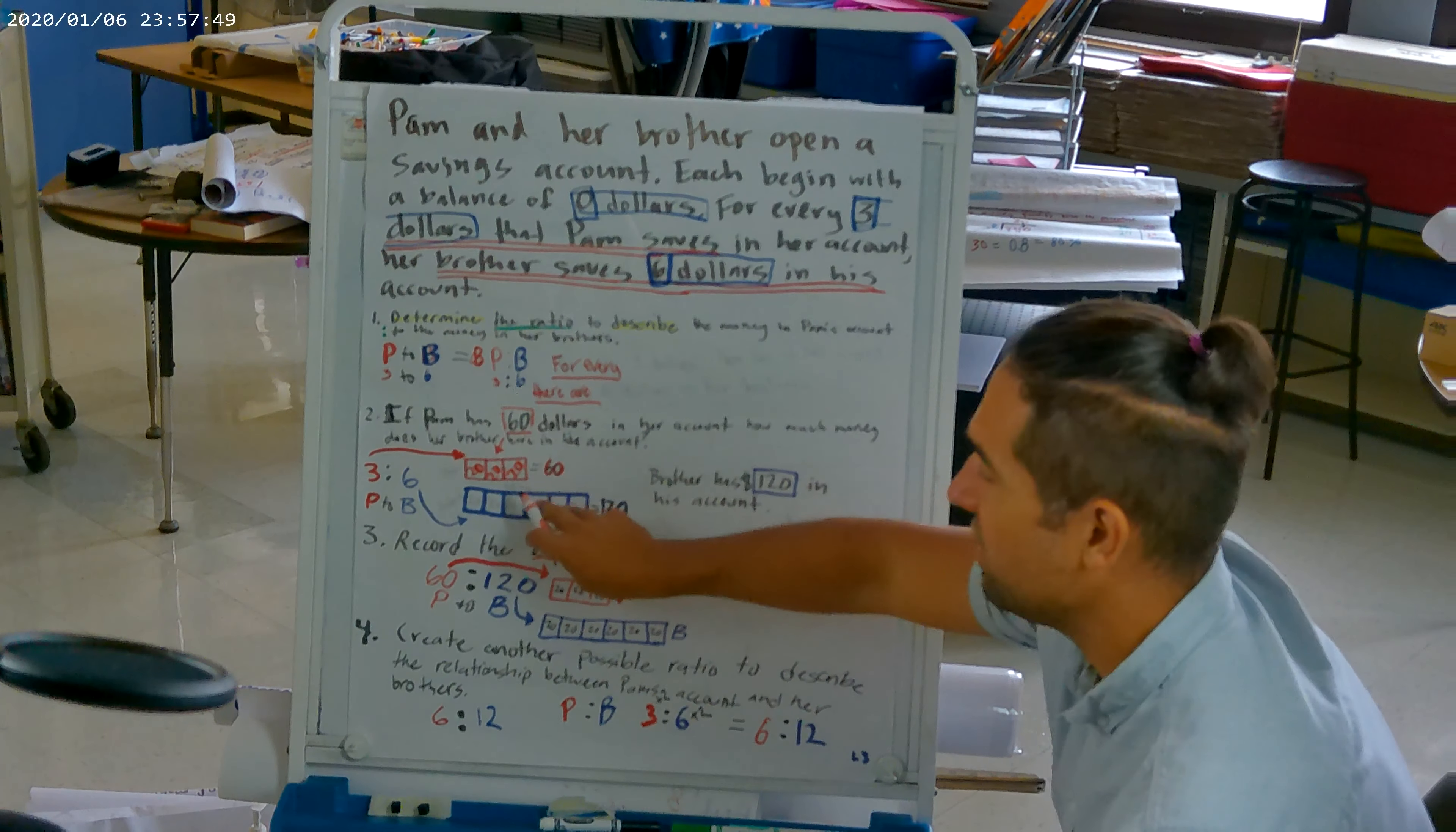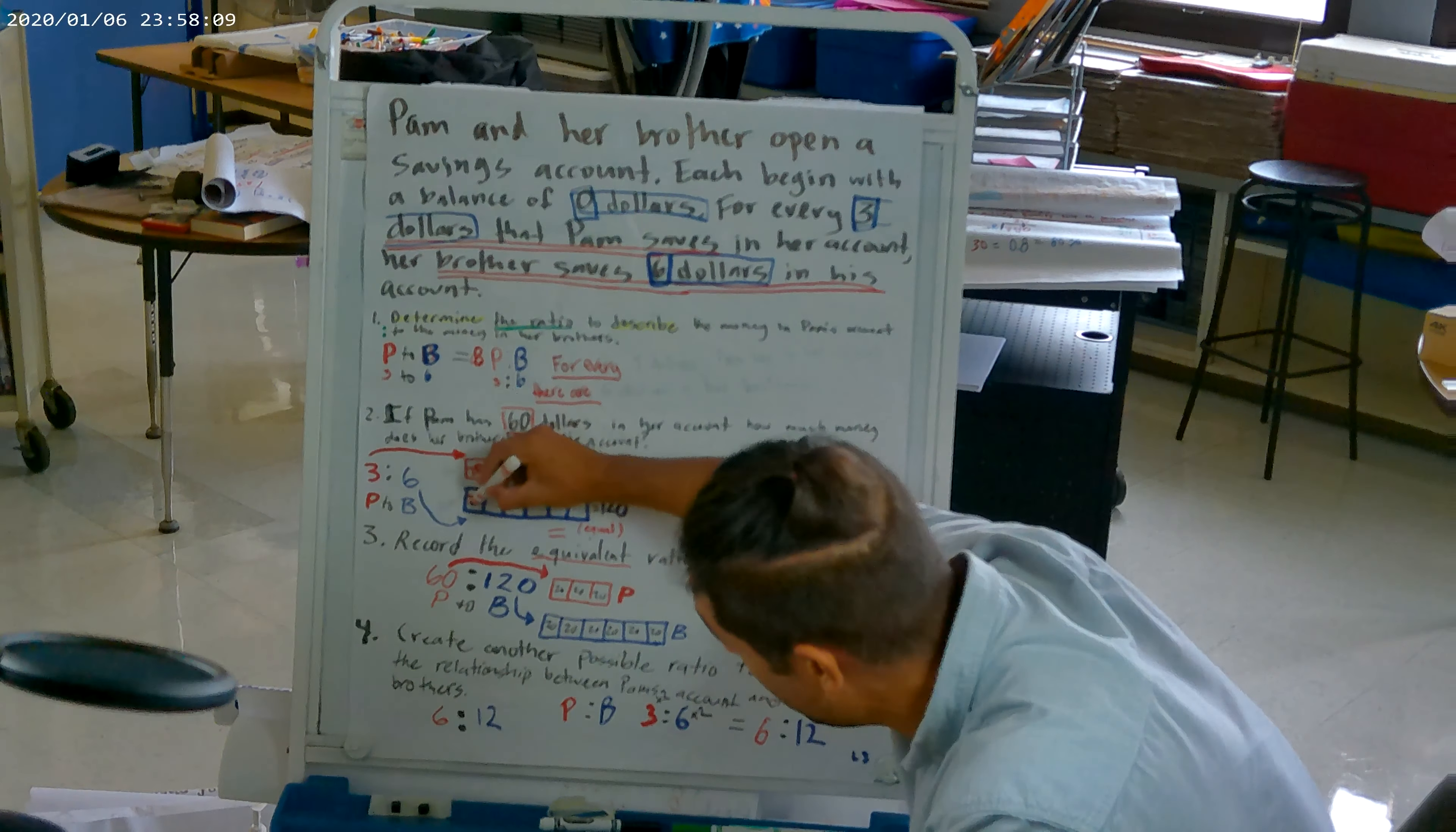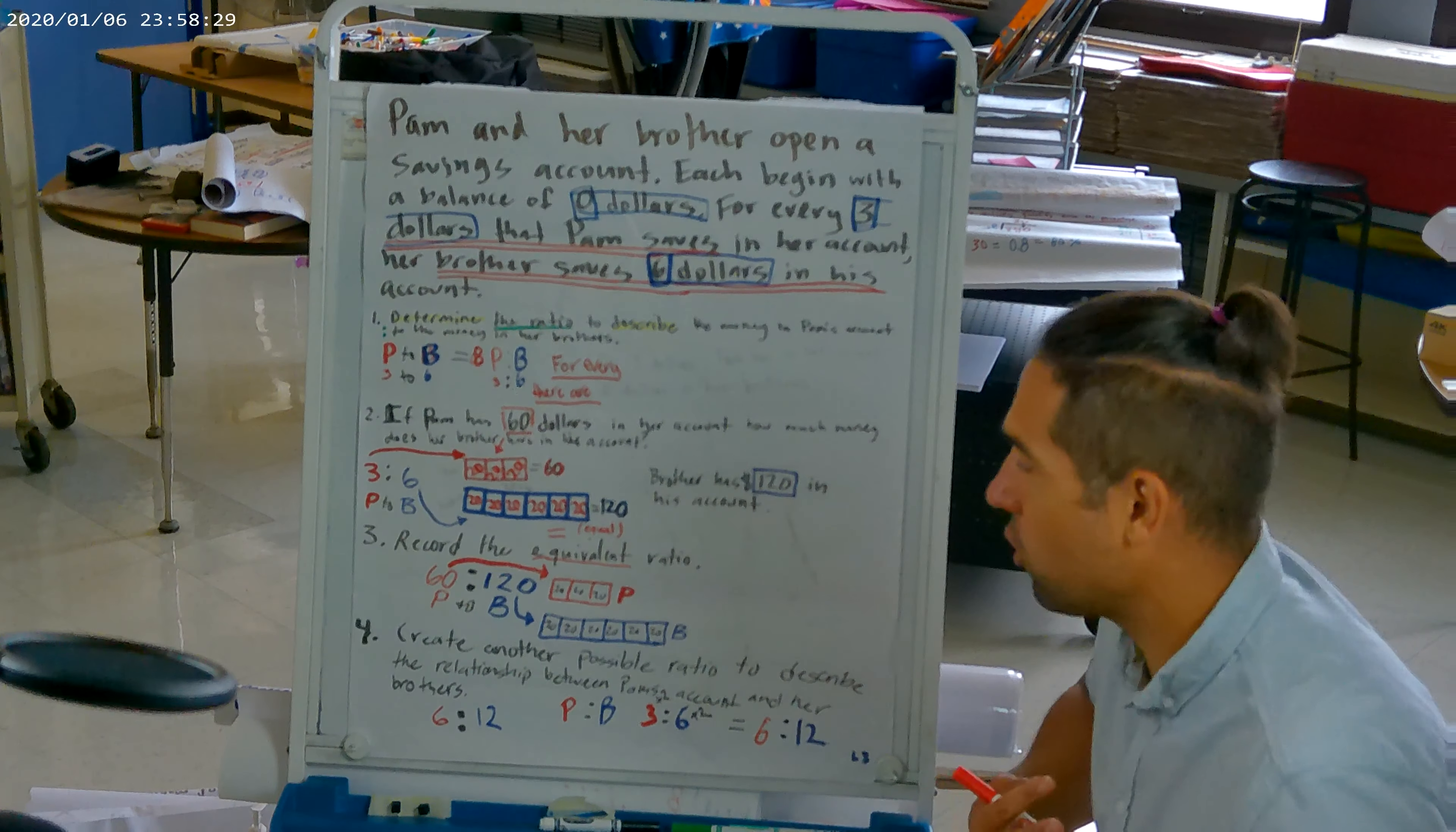Each square of Pam's is equal to 20 because if we go 20, 40, 60, and because it's a ratio, what we do to one side, we have to do to the other side. We have to do it to the other side. So we said, Pam had three squares and we put in 20 to make 60 because it told us that she has 60. That's the only reason we were able to do that. Now we know that we plugged in 20 to equal 60. Now what we did to Pam, we have to do for her brother. And so we go 20 in each of these open squares. So now we got 20, 40, 60, 80, 100, 120.